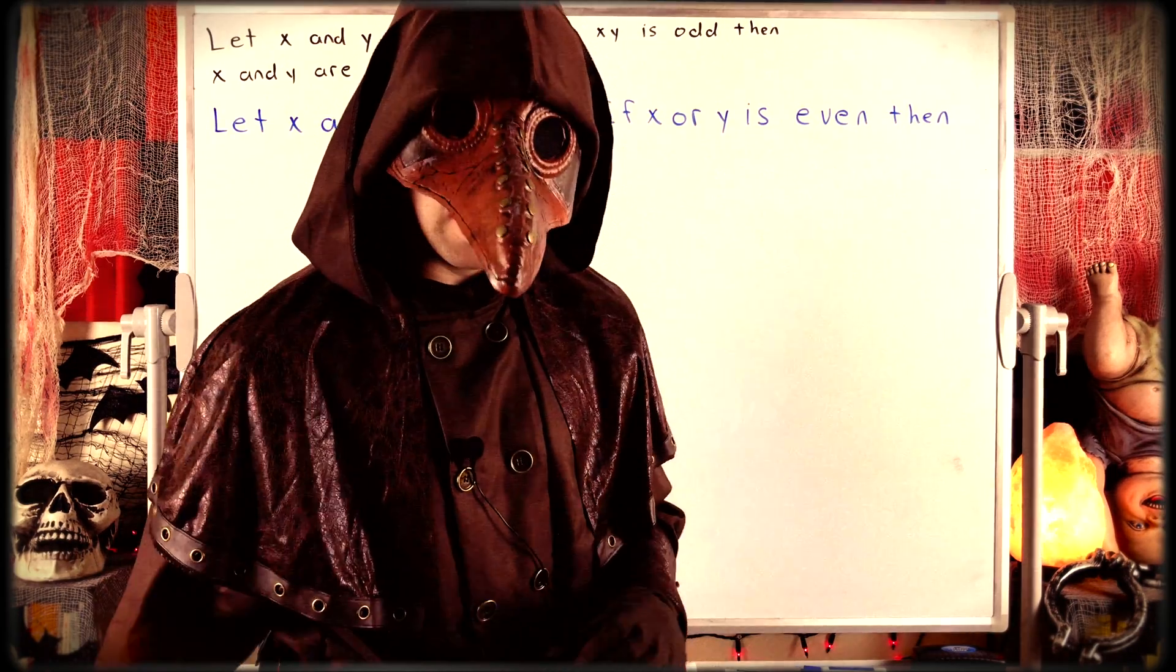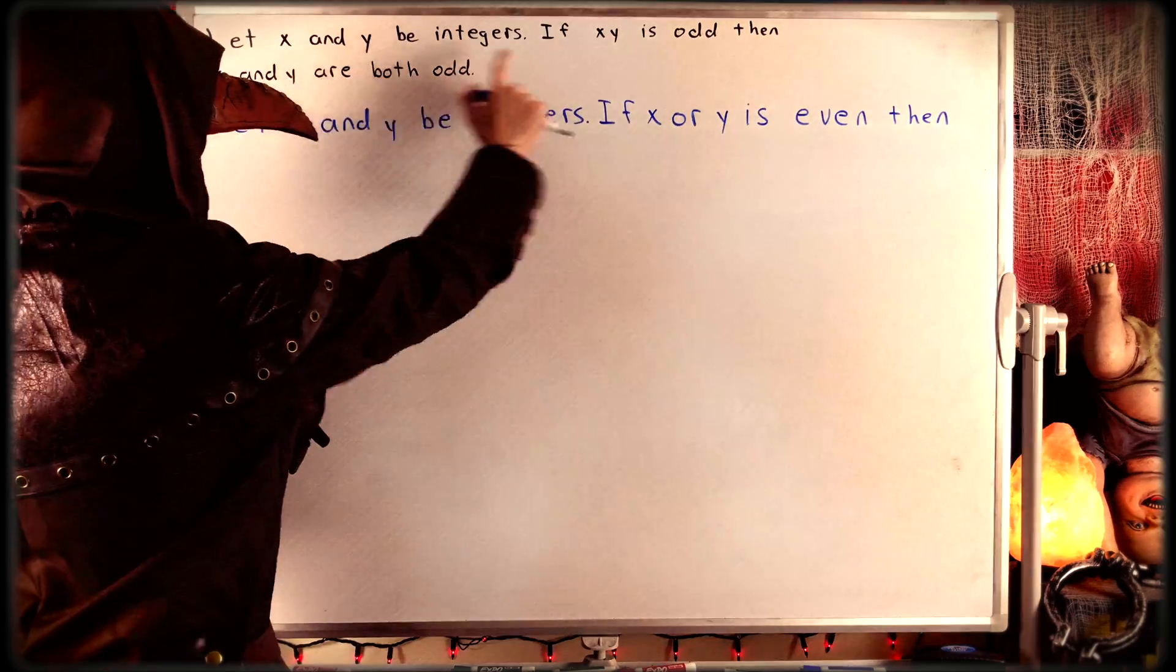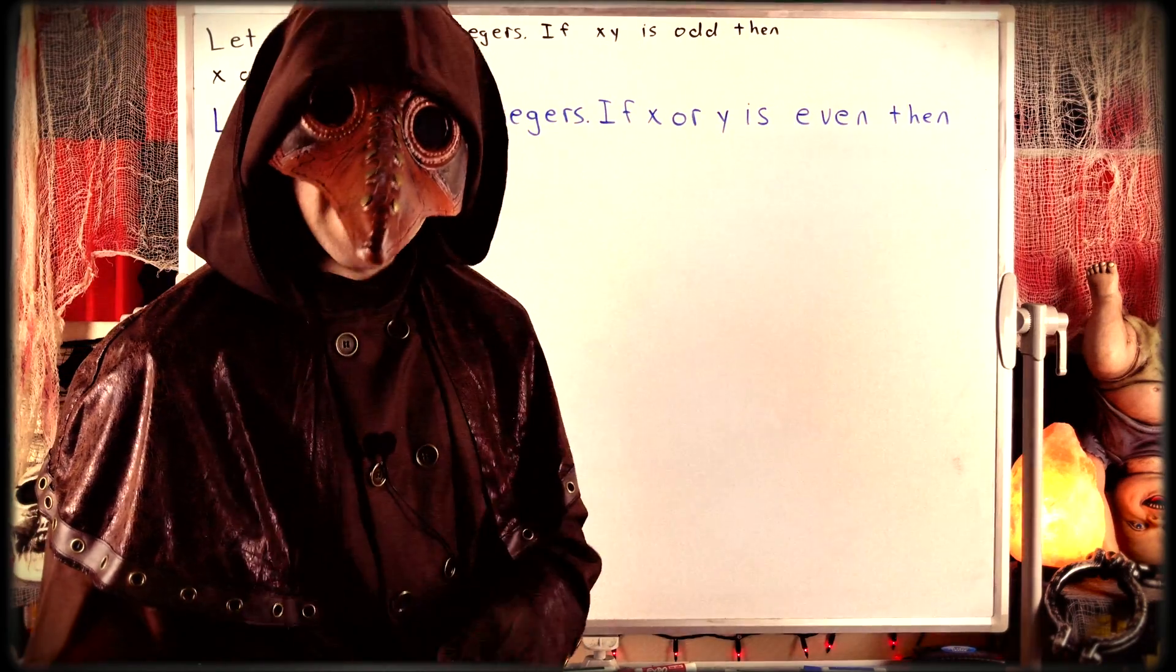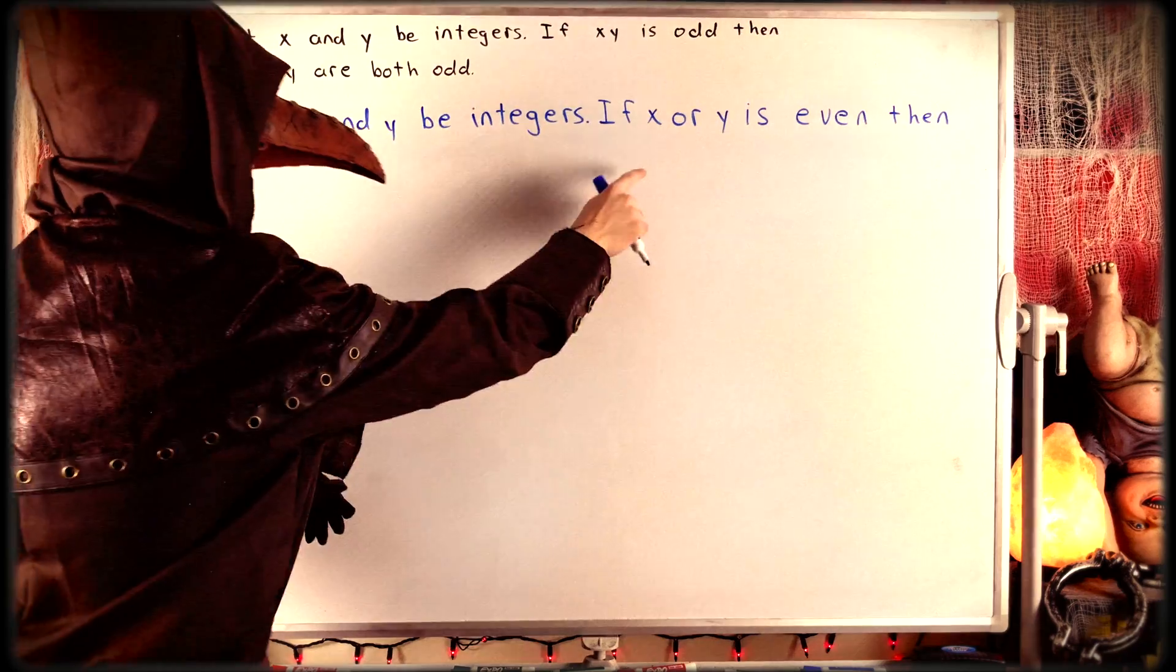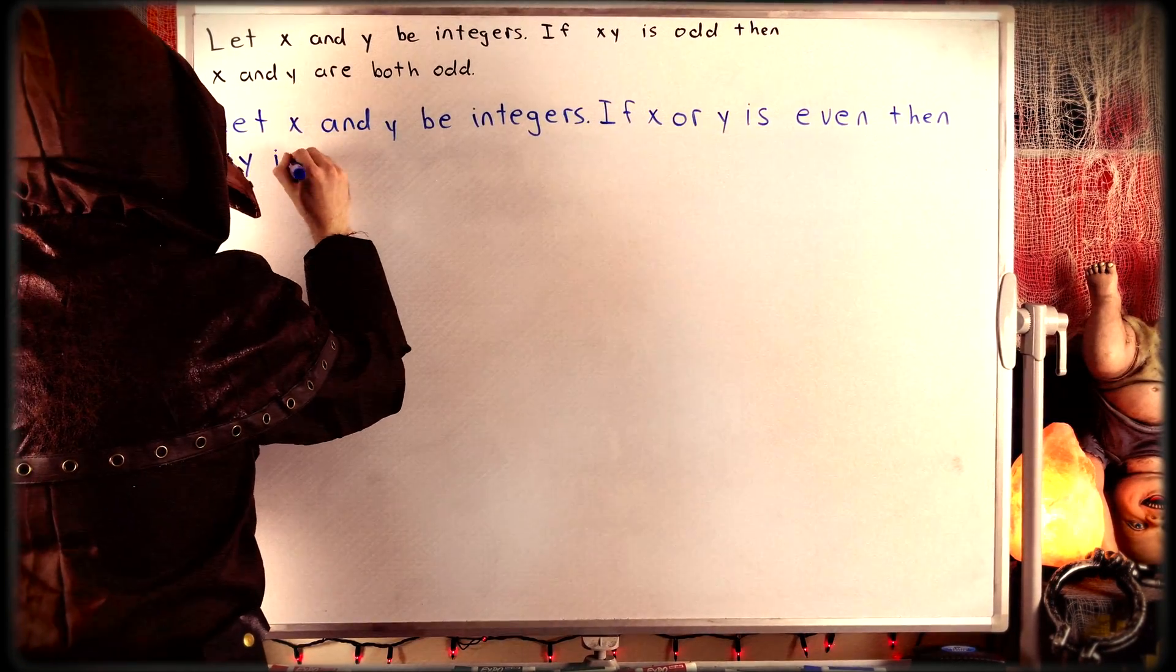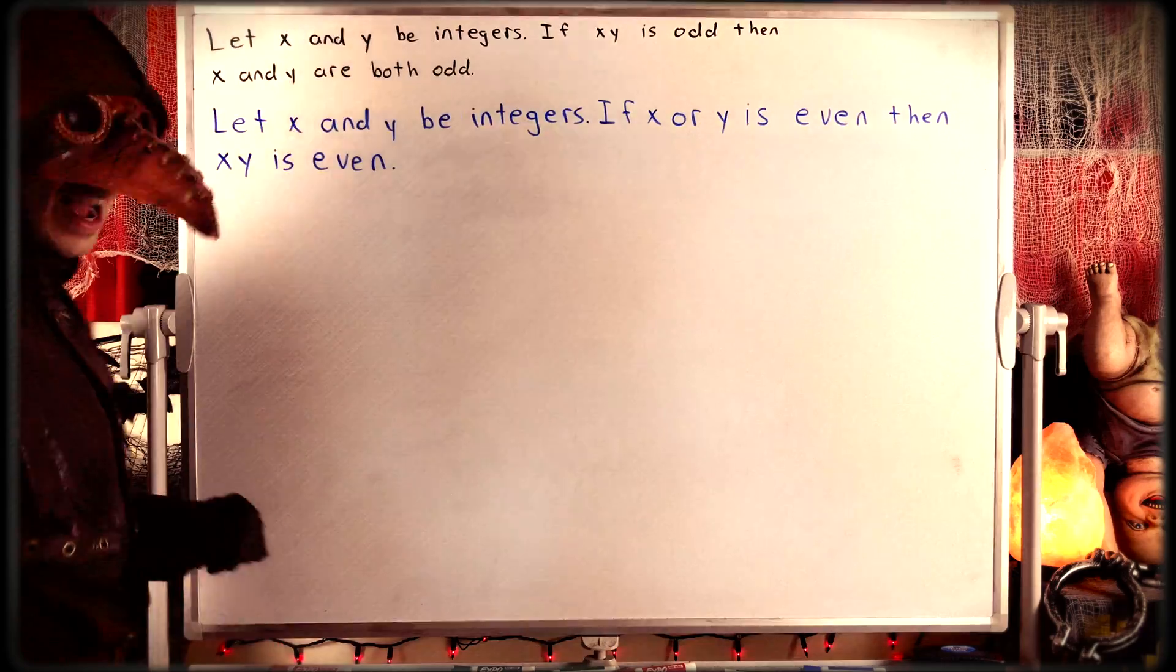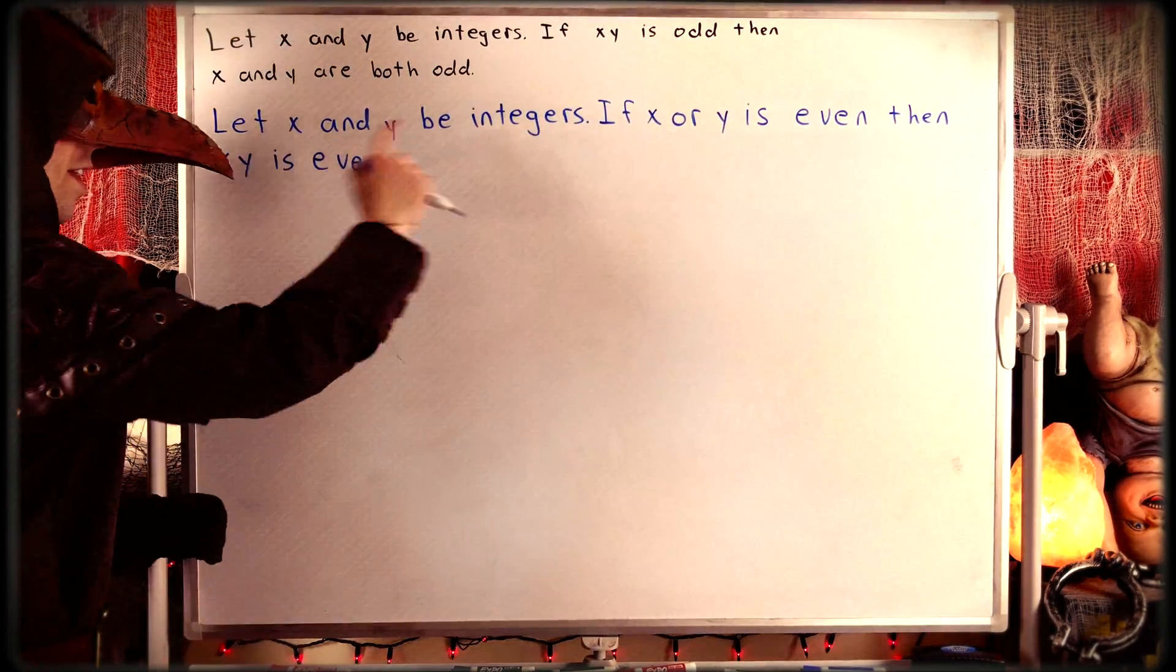Well recall that the conclusion of the contrapositive is the negation of the hypothesis of the original statement. The hypothesis of the original statement is that the product xy is odd. So the negation of that is that the product xy is even. So if x or y is even, then the product xy is even. And that completes our contrapositive. Let x and y be integers. If x or y is even, then the product xy is even. So if we can prove this statement, that will also prove the original statement that we were interested in.